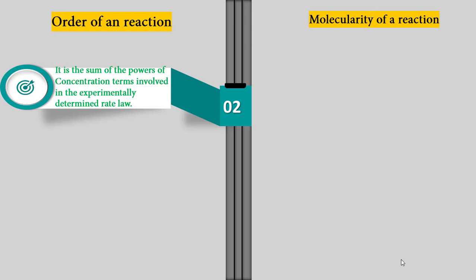Arrhenius equation: k = Ae^(−Ea/RT), where T is temperature, R is the gas constant, k is the rate constant, and Ea is the activation energy. Activation energy is the minimum energy that a molecule must possess in order to react.